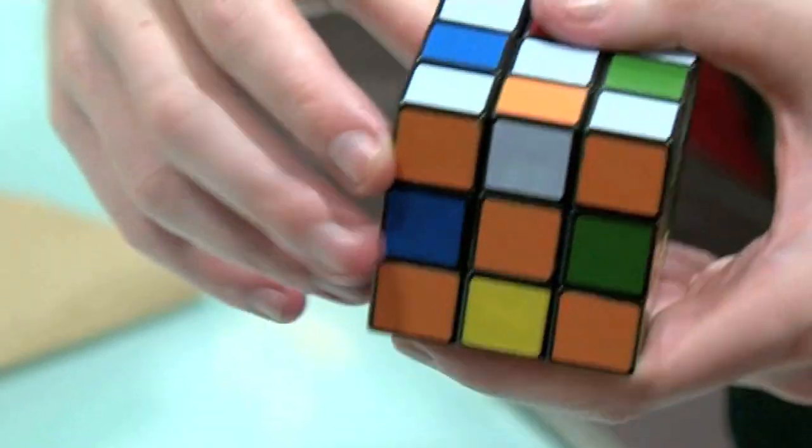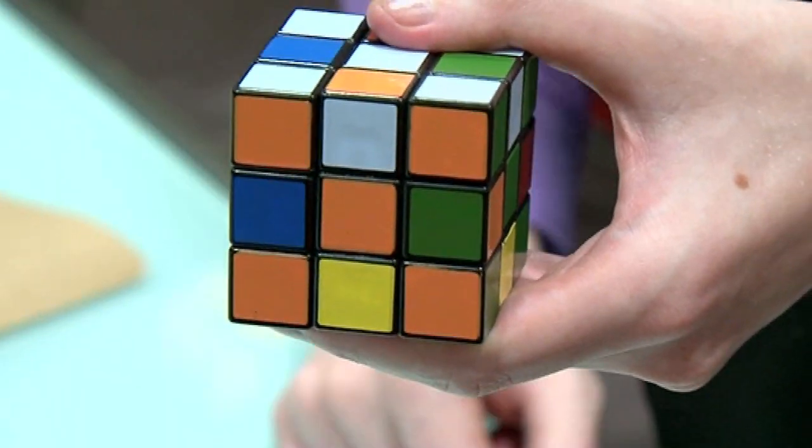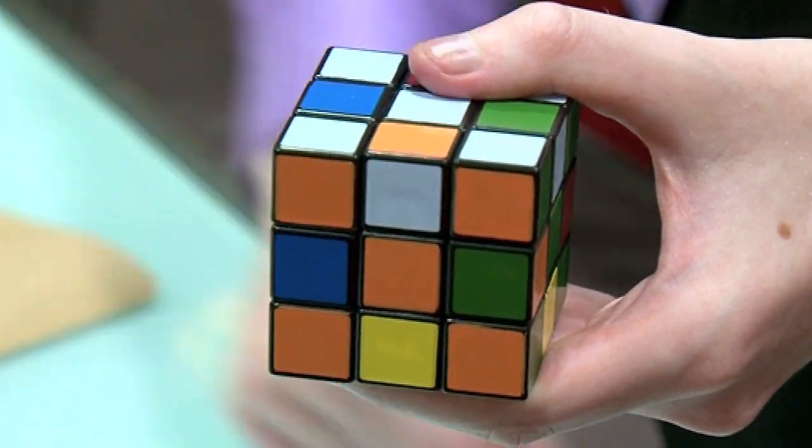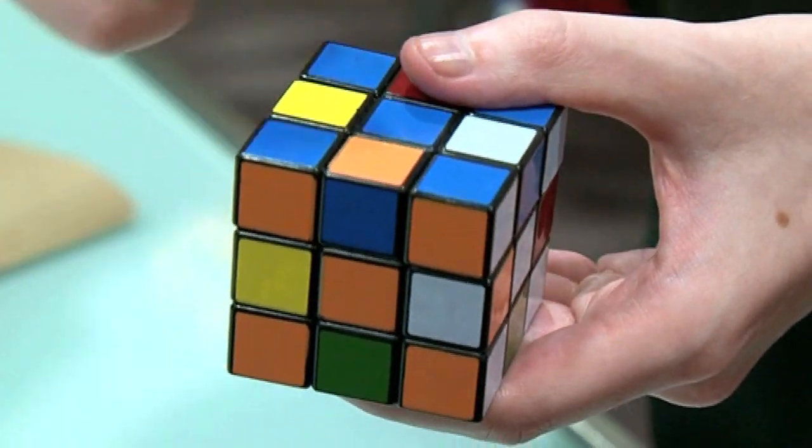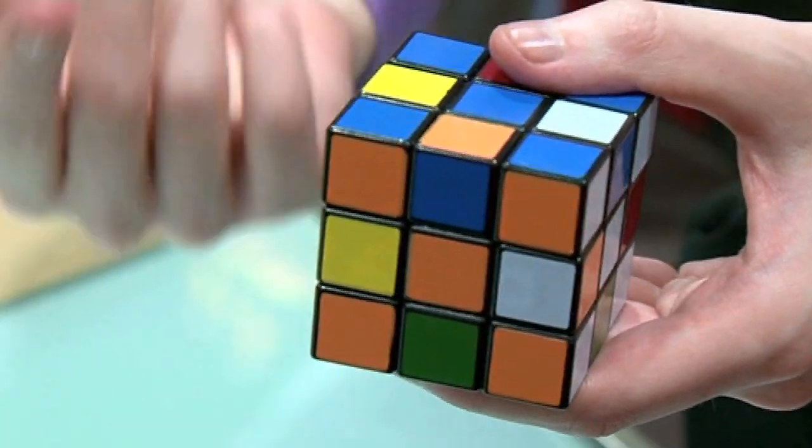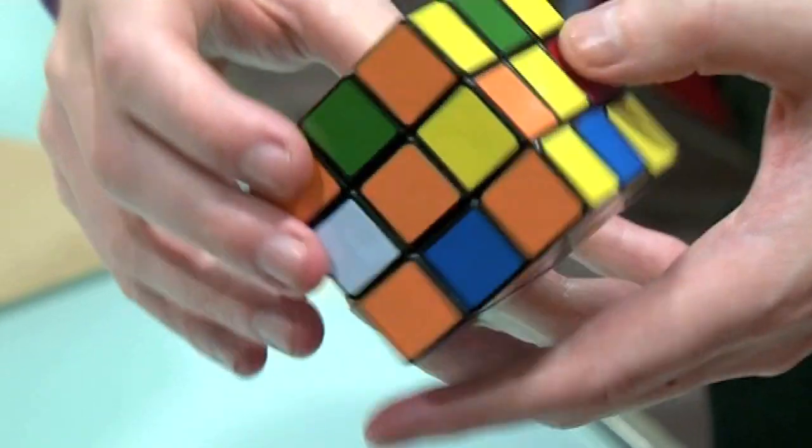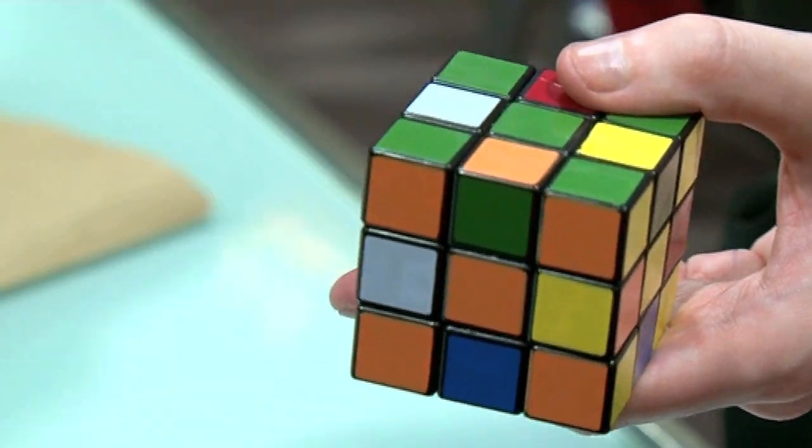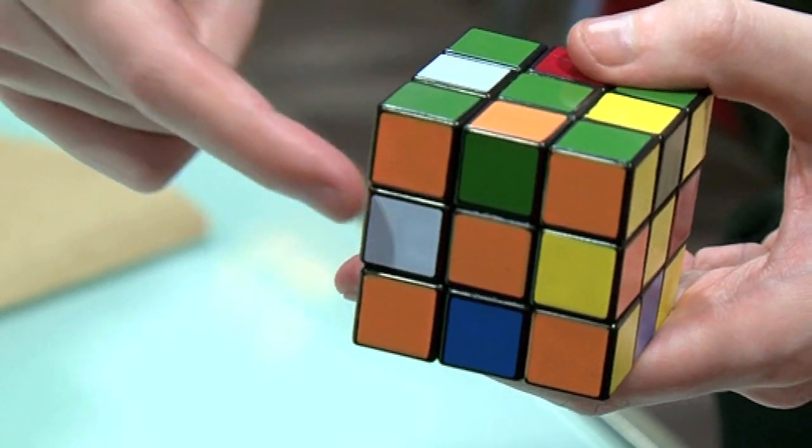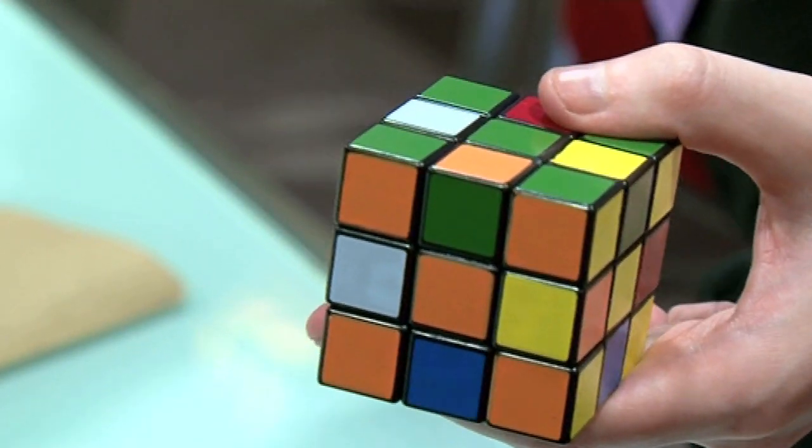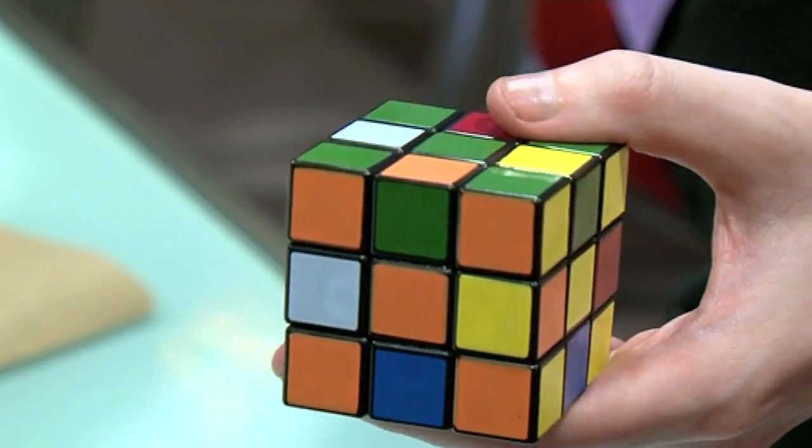Look at the edge pieces. This is the orange white edge, and it's flipped over. Turn it round. This is the orange blue edge, and it's flipped over. This is the orange yellow edge, which is flipped over. And that's the orange green edge, and that's flipped over. So all the edge pieces flip over. All the corners are absolutely fine.